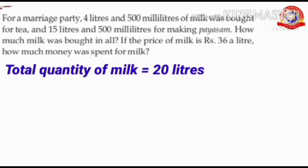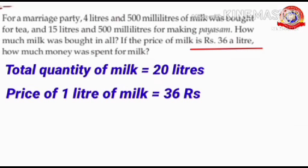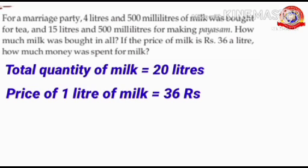Listen to the last part of the question. If the price of milk is 36 rupees a liter, how much money was spent for milk? What is the price of 1 liter of milk? Yes, 36 rupees. So, price of 1 liter of milk equals 36 rupees. You know that in total they bought 20 liters of milk. So, we have to find out the price of 20 liters of milk. Price of 1 liter of milk is 36 rupees. So, price of 20 liters of milk is 20 times 36.